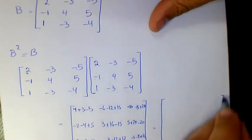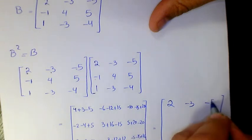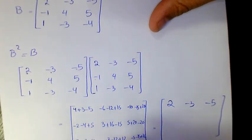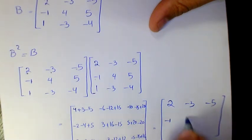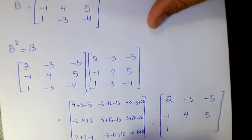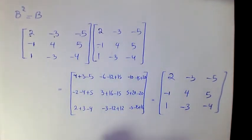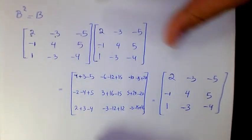That gives us two, negative three, negative five, negative one, positive four, five, one, negative three, negative four. So B squared is equal to B. That's why we have an idempotent matrix.